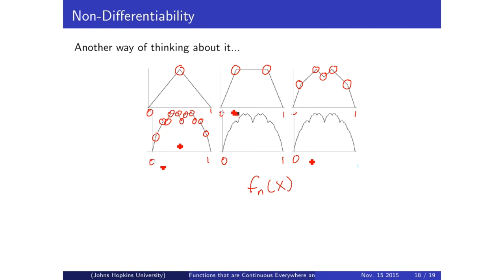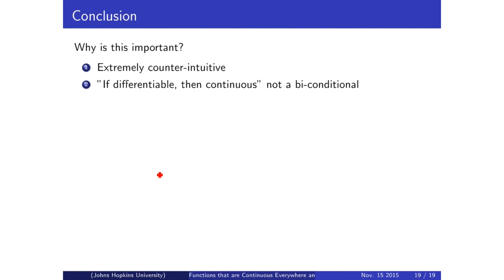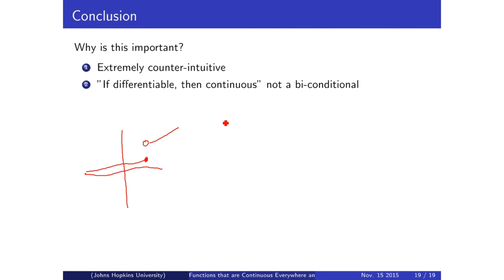Now that we've proven both the continuity and the non-differentiability of the Blancmange curve, why is that important — why is that cool? It's extremely counterintuitive, because everyone knows that if a function has a discontinuity then it's non-differentiable. We already have the statement: if differentiable, then continuous. But it turns out this is not a biconditional — the converse, 'if continuous then differentiable,' is actually completely wrong, as evidenced by the continuity but non-differentiability of the Blancmange curve.